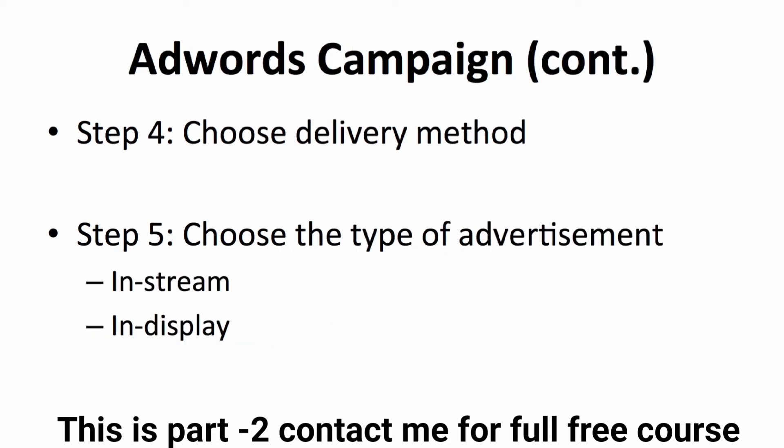Moving on, you can choose the delivery method. First, choose the network: YouTube search page, YouTube video advertisements, or video on Google partner sites, apps, and display network. You can tick every box as well. Then choose the locations where you want your video ad to be shown and the languages your target audience speaks.